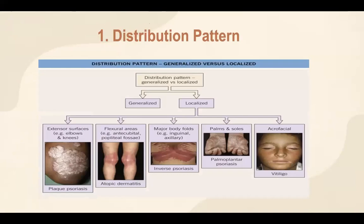Let's begin with the distribution pattern of the lesion. When we see a patient with a skin condition, first we need to look at the skin as a whole. Is the rash all over the body — therefore we say it is generalized — or is it localized? If it's localized, is it in specific areas? For example, is it affecting the elbows and knees, which are extensor surfaces, such as in plaque psoriasis? Or is it on flexural surfaces, which are the antecubital and popliteal fossa, commonly affected by atopic dermatitis?